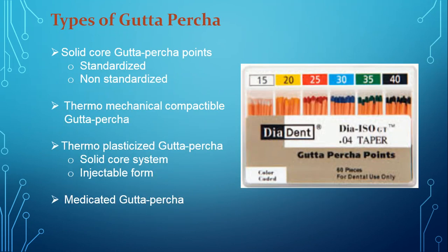Types of gutta-percha: first is solid core gutta-percha points, which may be standardized or non-standardized. Second is thermomechanical compactable gutta-percha. Third is thermoplasticized gutta-percha, available in solid core system and injectable form. Fourth is medicated gutta-percha.